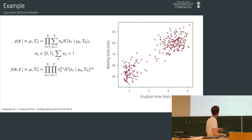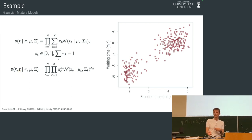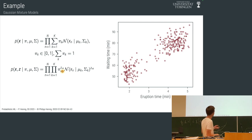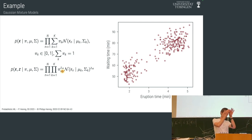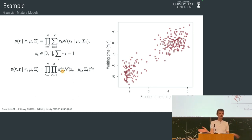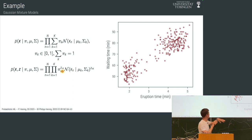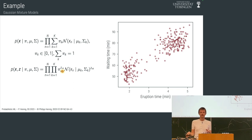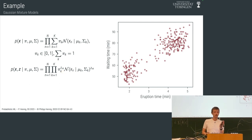Another way of writing this is to introduce a variable z which gives us the identity of which cluster each data point is in. We think of z as a matrix of size (number of data points) by (number of clusters) with a one-hot encoding — a binary matrix that is zero almost everywhere, with exactly one '1' in each row, indicating that the nth data point belongs to cluster k.